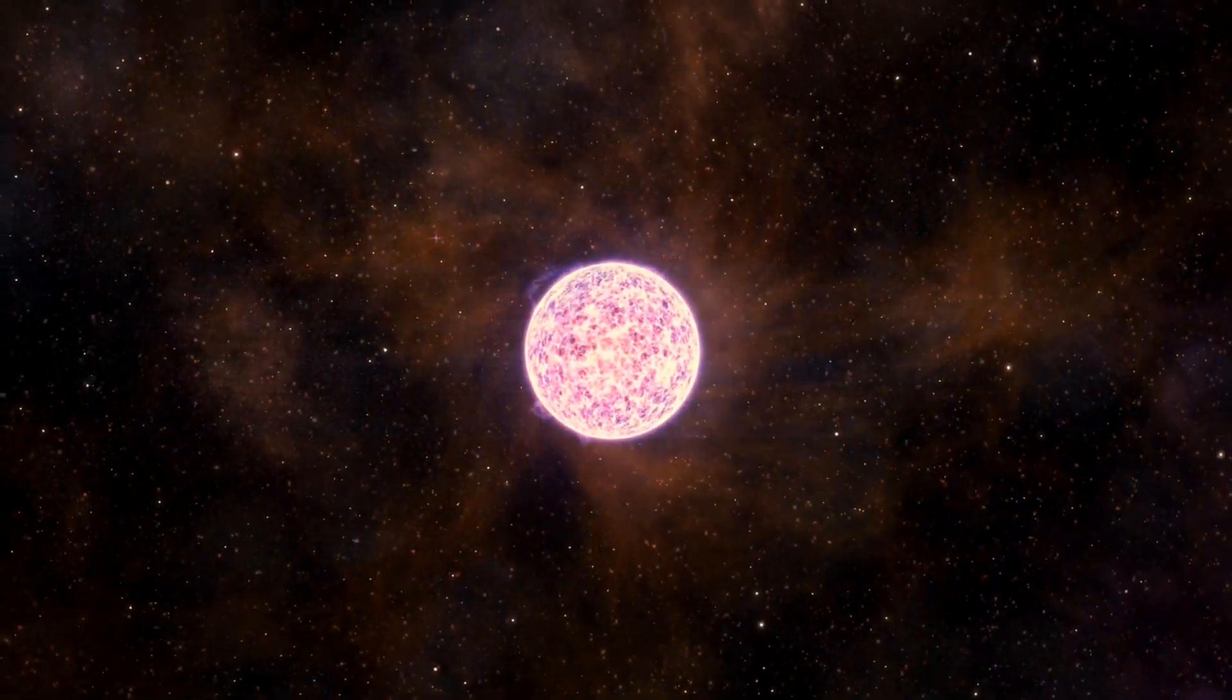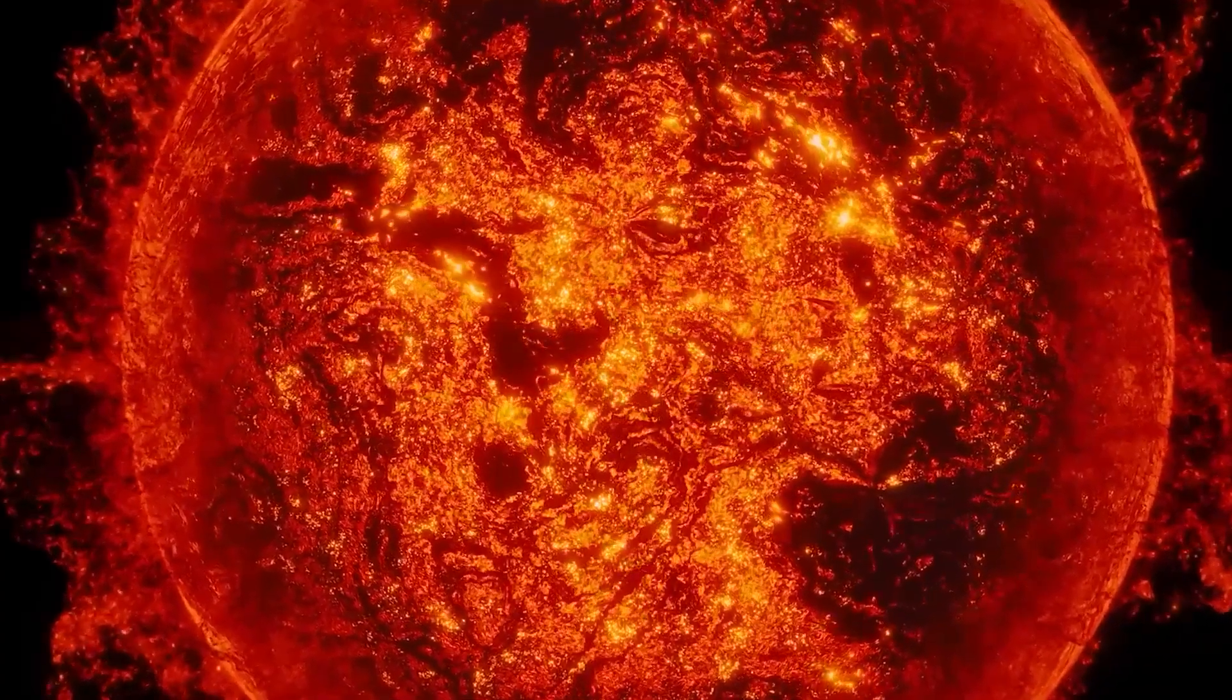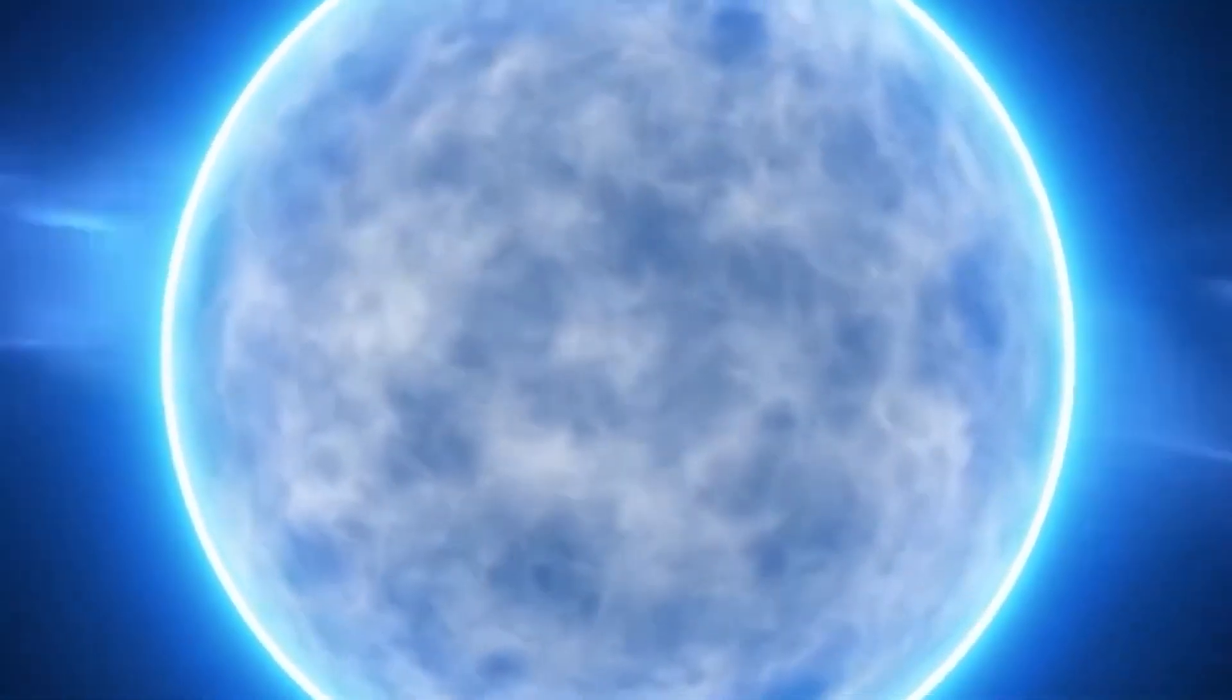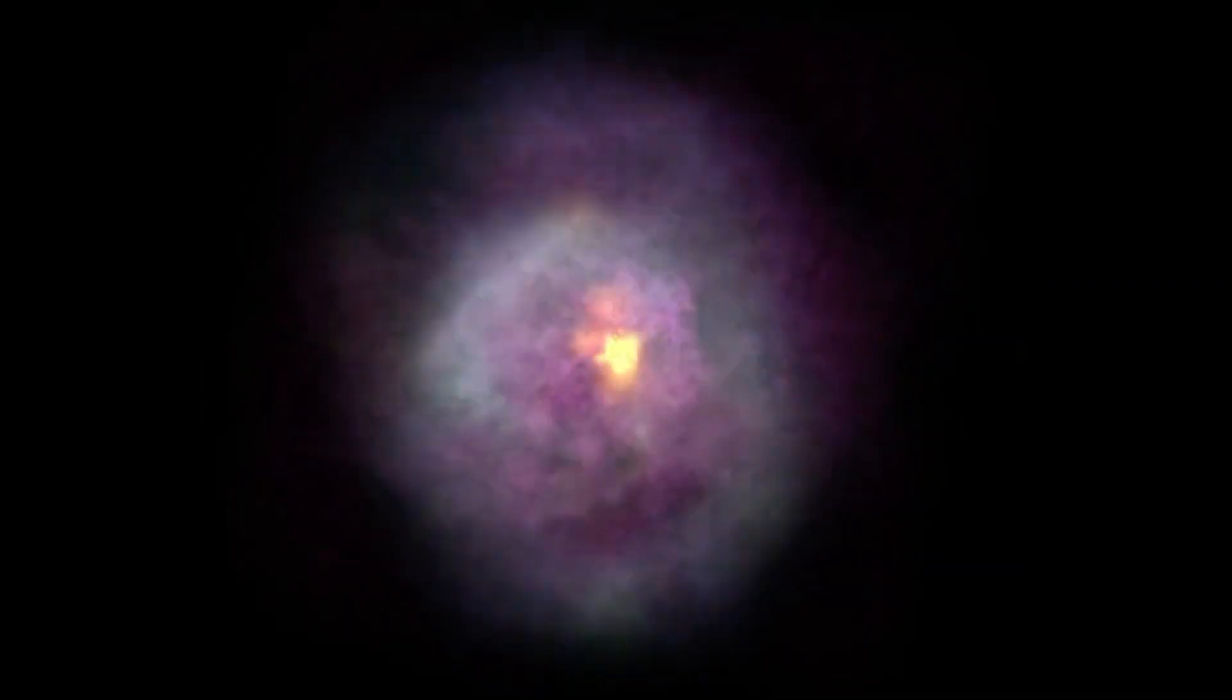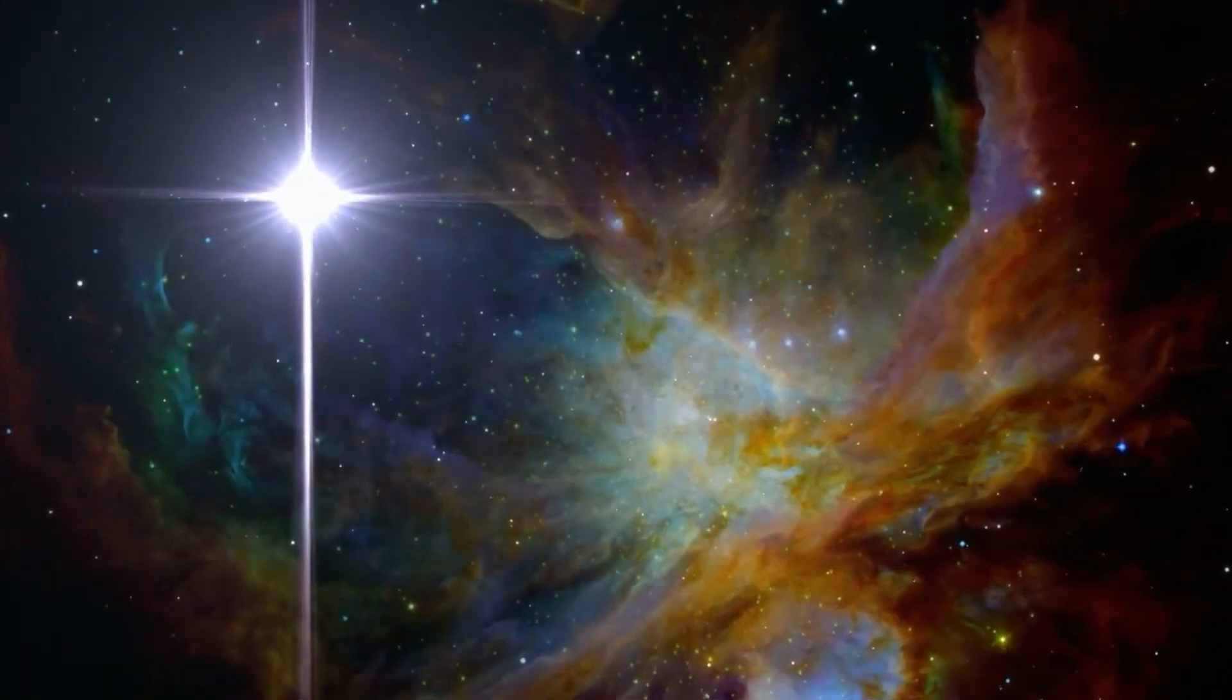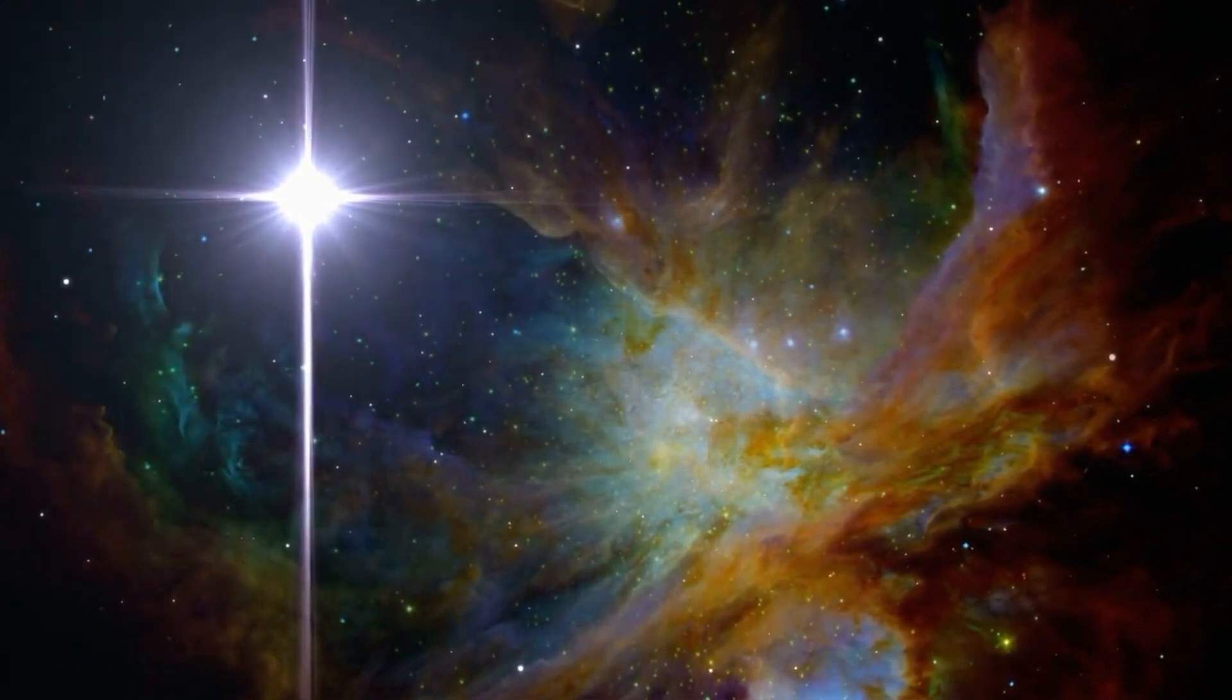Such stars undergo an extensive journey through different stages in their evolutionary cycle. When new, these stars have relatively low temperatures and brightness. Subsequently, they advance to the main sequence phase, marked by nuclear fusion, where they remain stable for billions of years. Finally, as their hydrogen fuel is depleted, they enter the red giant phase, where they experience a rapid increase in temperature and brightness. This phase sees a dramatic increase in energy output before reaching a catastrophic explosion.